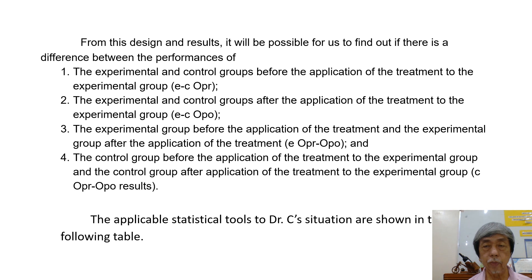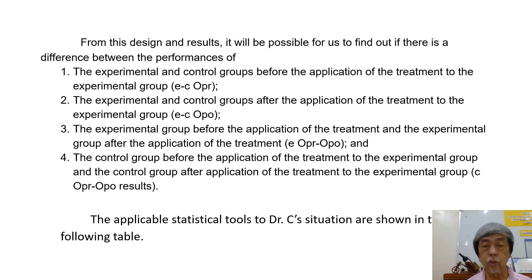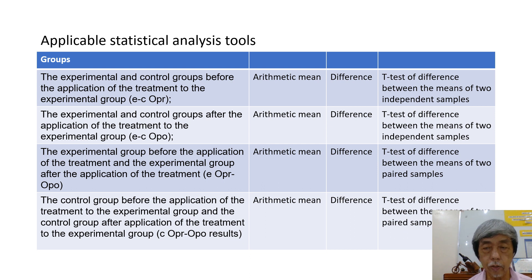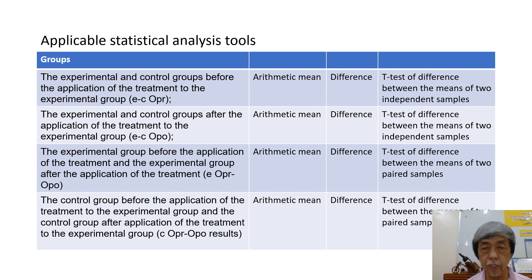From this design and results, it will be possible to find out if there is a difference between the performances of the specified groups. The applicable statistical tools for Dr. C's situation are shown in the following table. For the pre-test post-test control group design, the tools are: arithmetic mean, difference, t-test of difference between the means of two independent samples, and t-test of difference between the means of two paired samples.